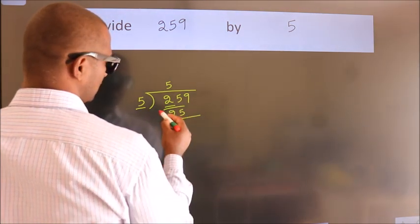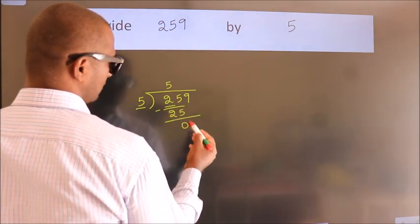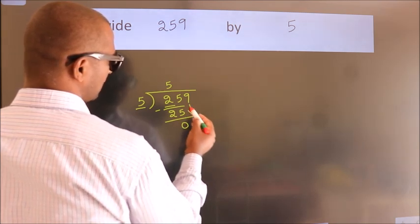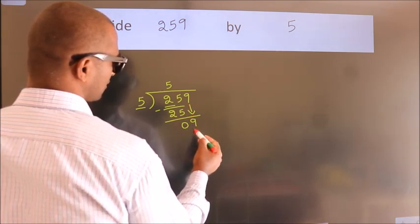Now we should subtract. We get 0. After this, bring down the next number, so bring 9 down.